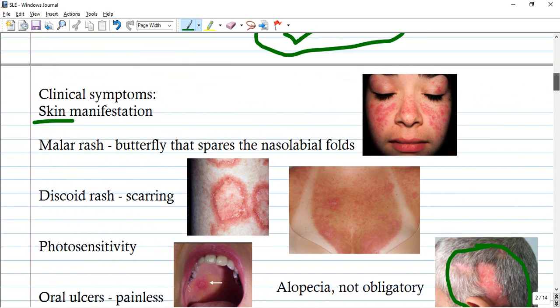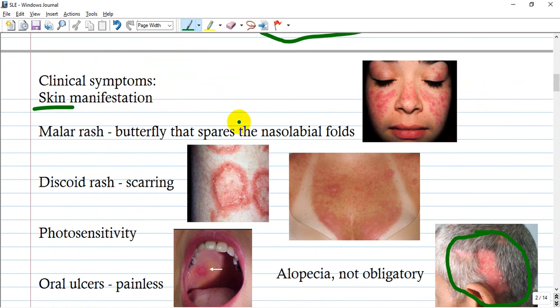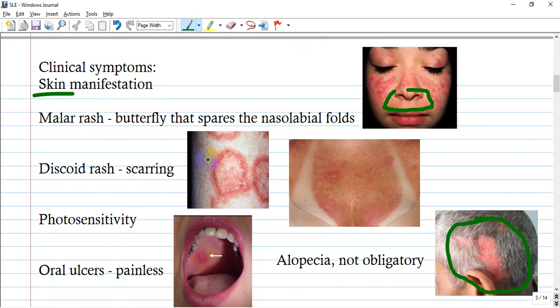Let's go to clinical manifestations. The patient could have a malar rash, which is a butterfly pattern that spares the nasolabial folds. A discoid rash with scarring at the margins or edges, as you see here.